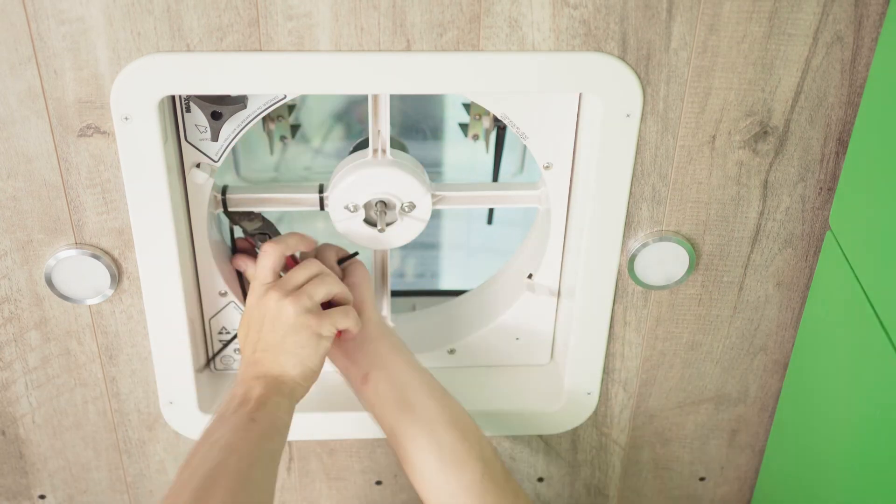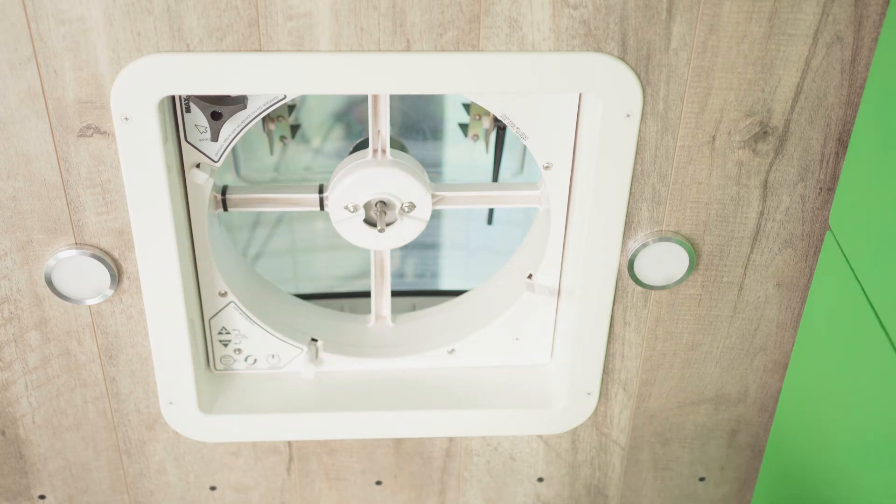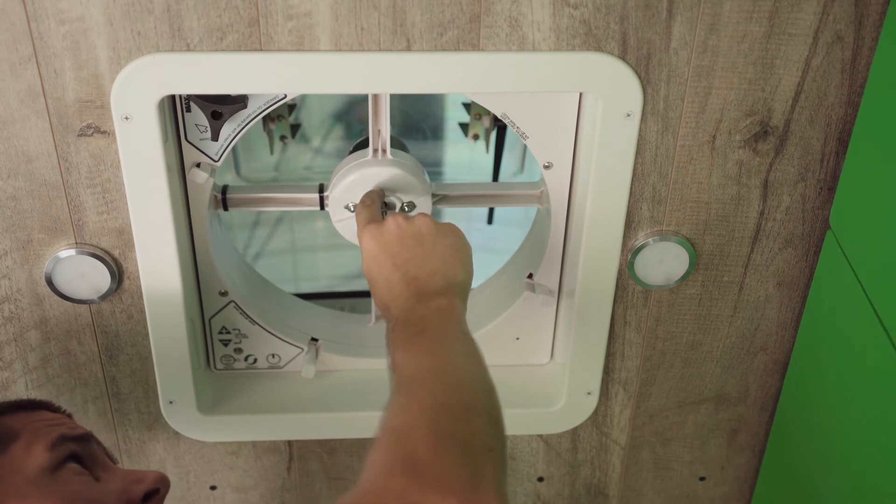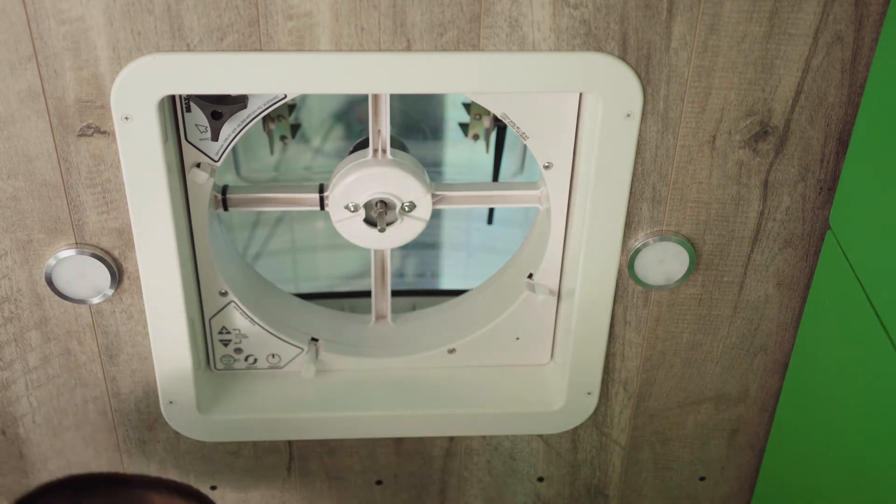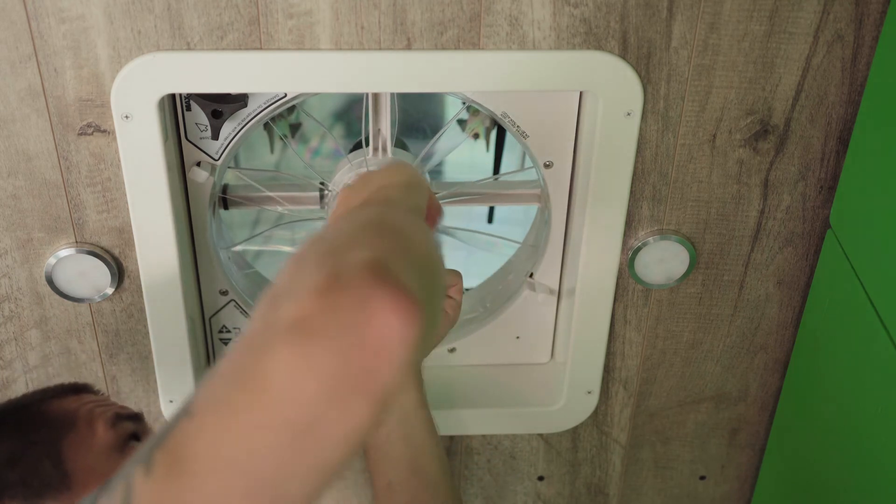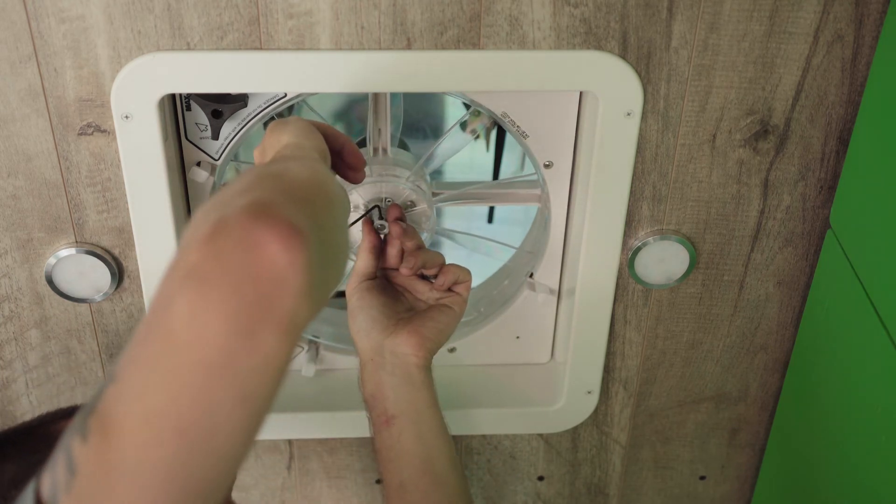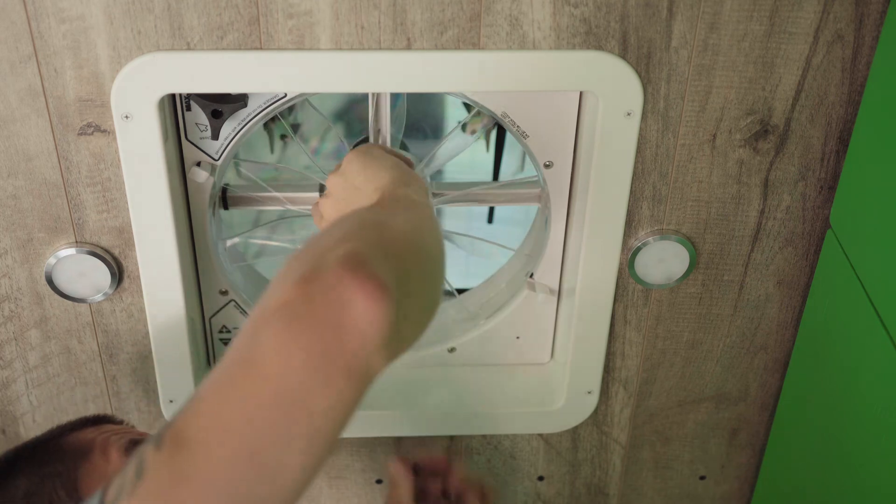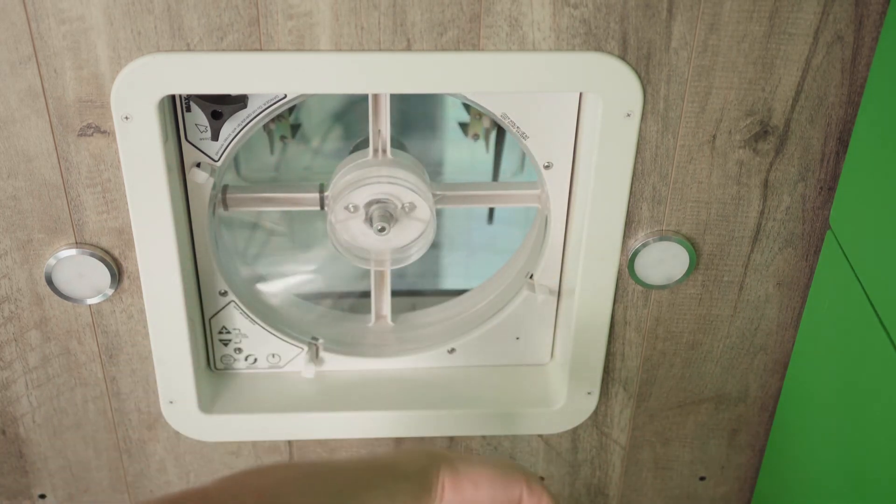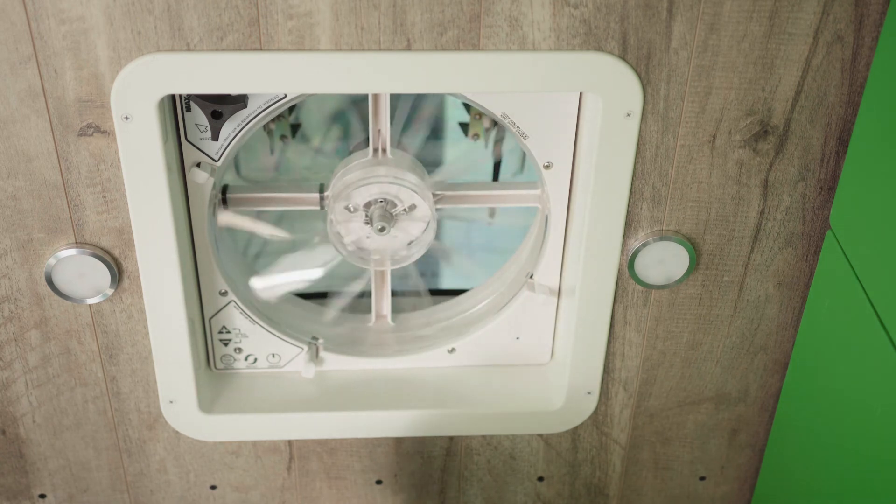Then we'll take our fan blade and put it back on and make sure that the flat spot is where the set screw goes for the fan blade. Push it all the way up and just give it a good snug to tighten it down. Don't want it too tight because it is an aluminum shaft. And then our fan is nice and quiet.